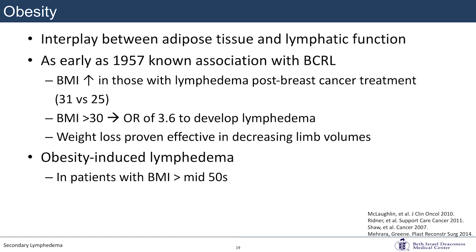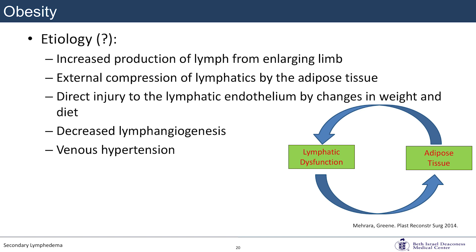Regarding obesity: there's a clear interplay between adipose tissue and lymphatic function. As early as the 1950s, it was understood that patients with higher BMI at the time of breast cancer surgery were at higher risk for lymphedema, with an odds ratio of three- to fourfold for BMI greater than 30. Weight loss is effective in reducing limb size. Even without a second hit like cancer treatment or cellulitis, obesity alone can cause lymphedema — possibly around BMI 50–55. The mechanism isn't fully understood: increased lymph production, external compression by adipose tissue, direct injury from weight and diet changes, decreased lymphangiogenesis, or development of venous hypertension may all play a role.